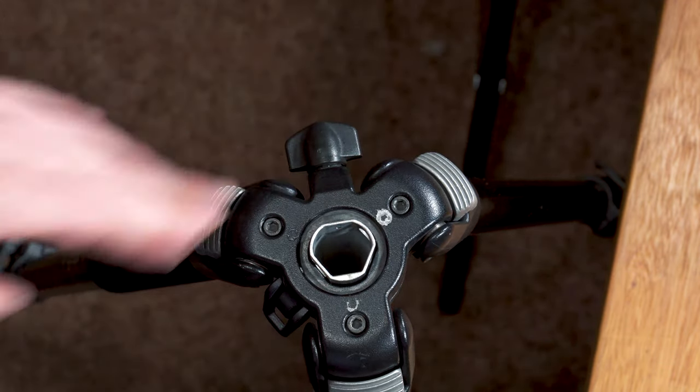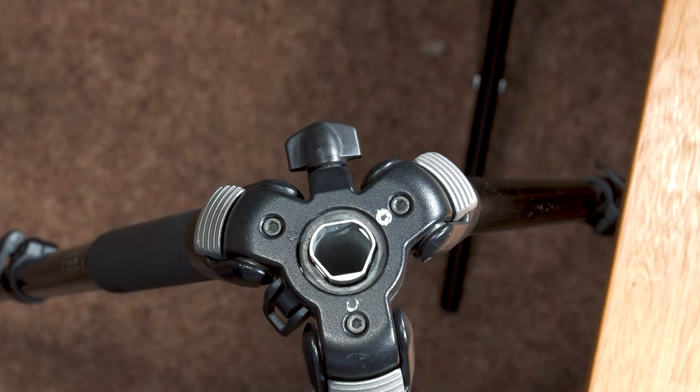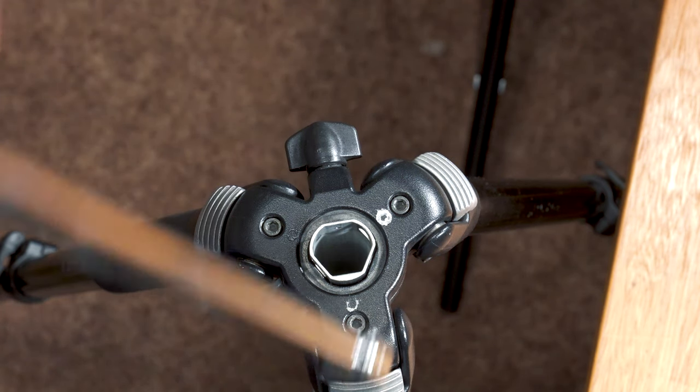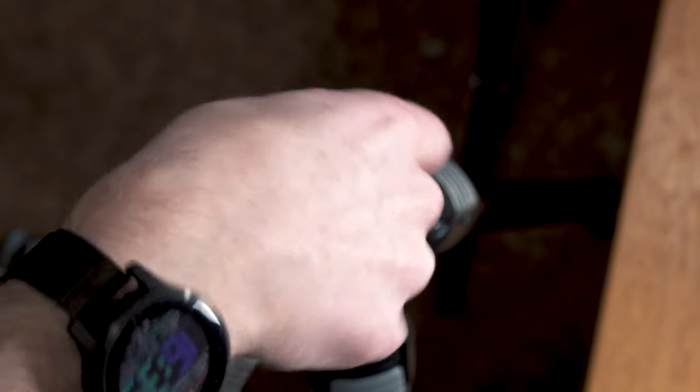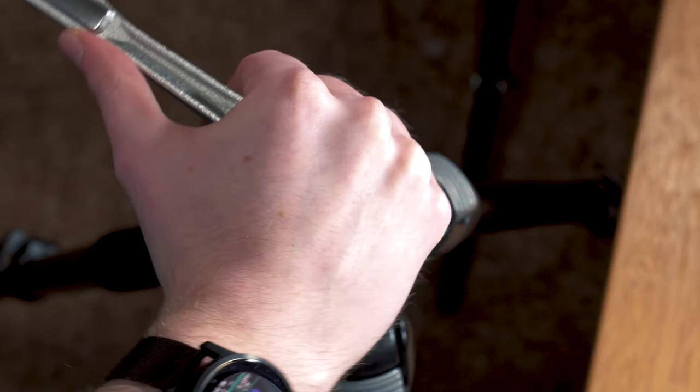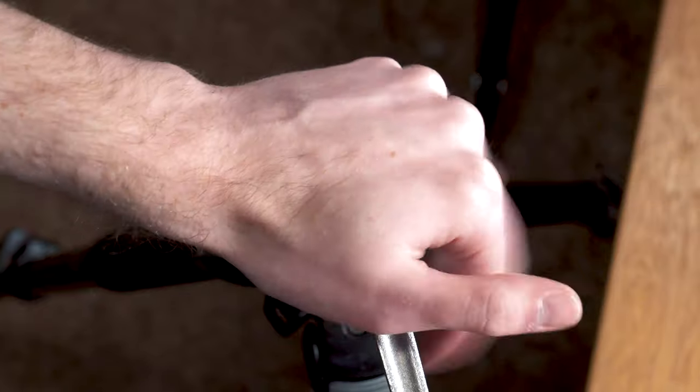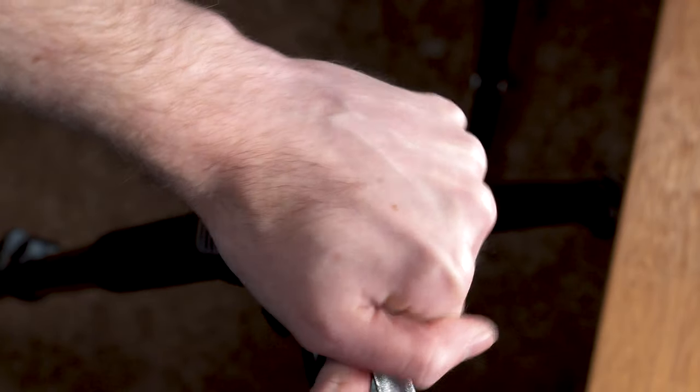Anyway, we'll just tighten that down, and then we'll bring our socket wrench back in. What we need to do is just feed this down through there, kind of give it a little twist so it engages with the head of the bolt down there. And then we just go ahead and tighten it. You don't need to go crazy on this, but I usually like to give it a good crack.